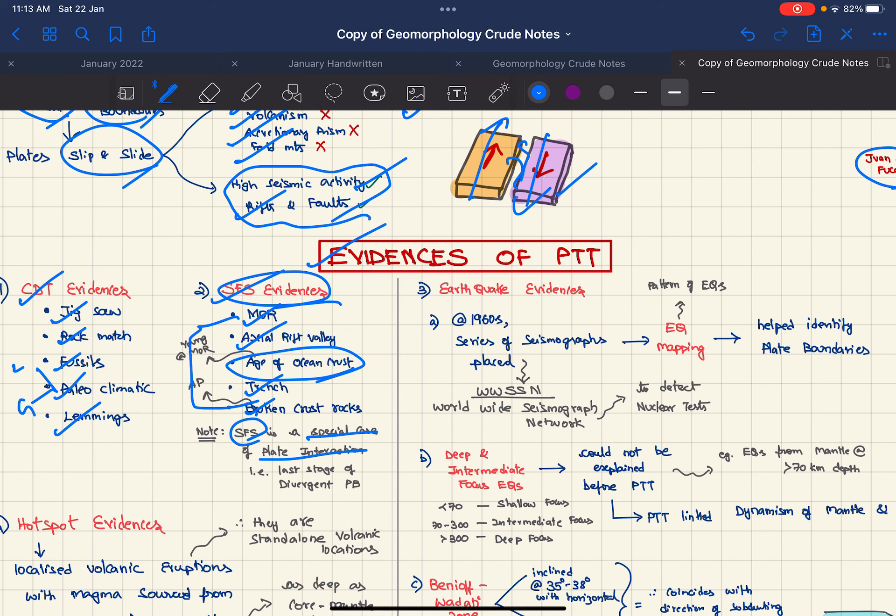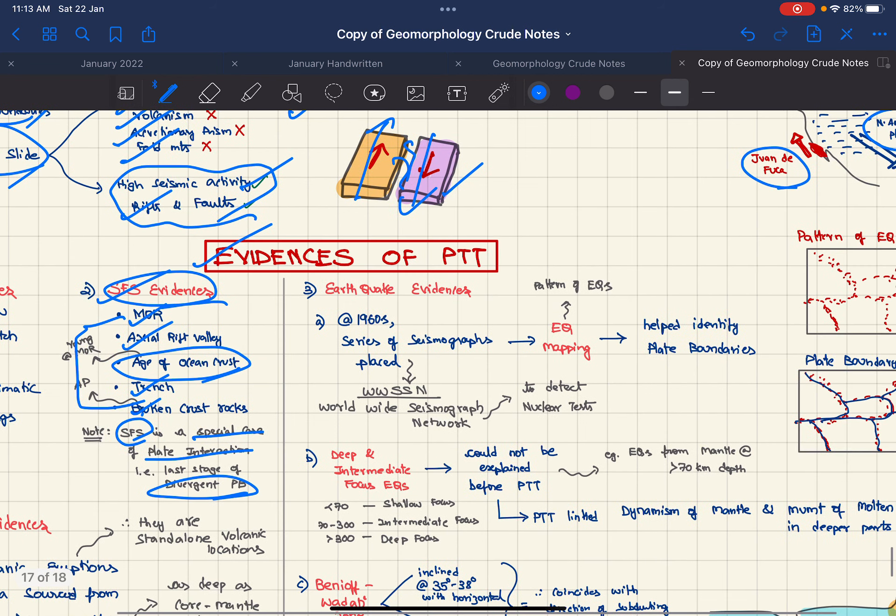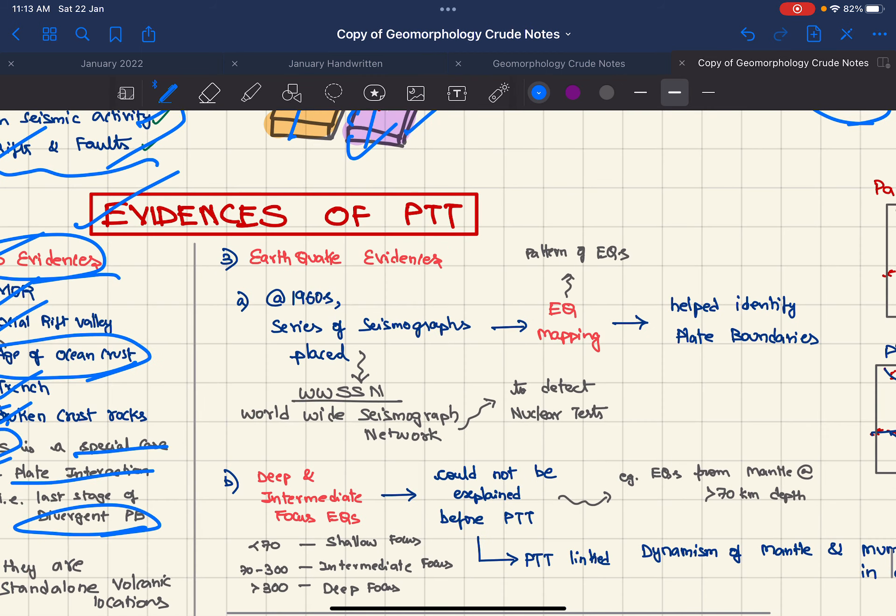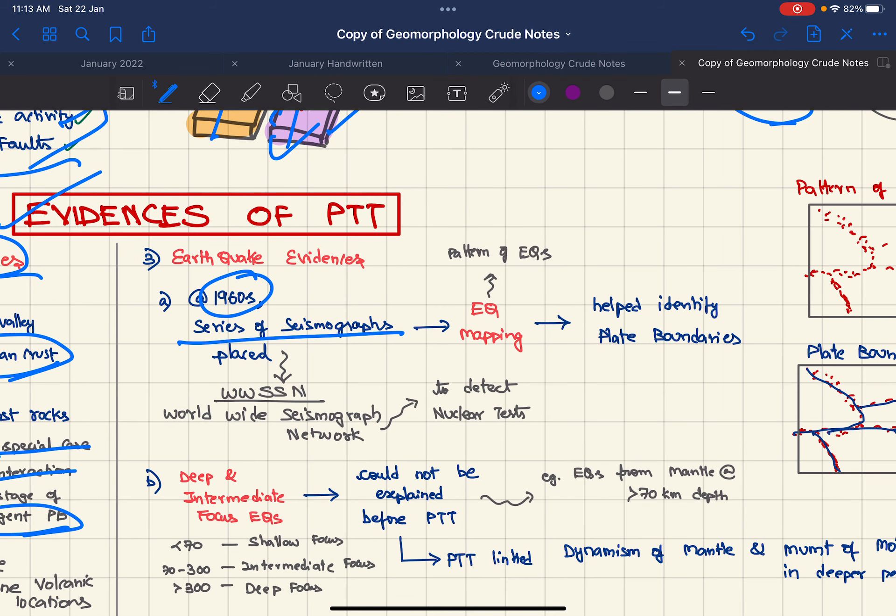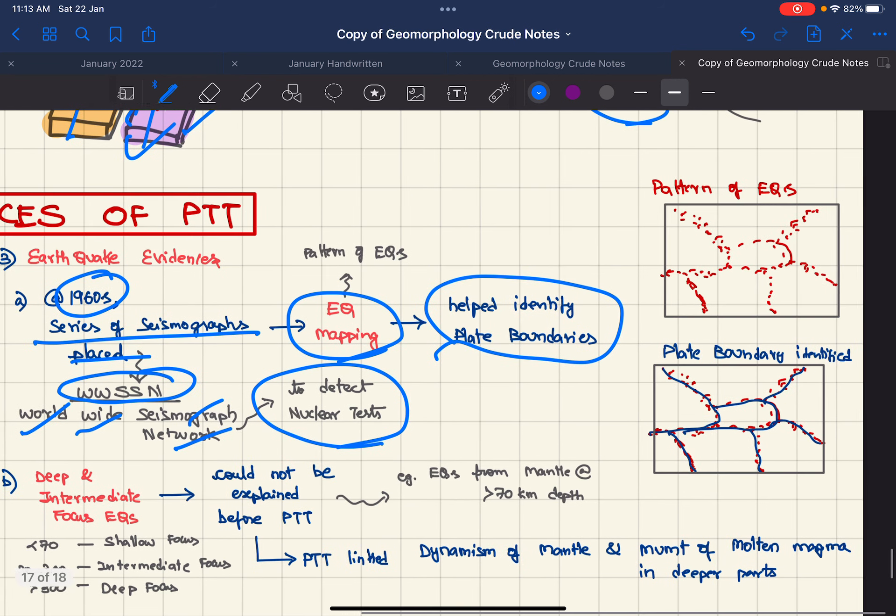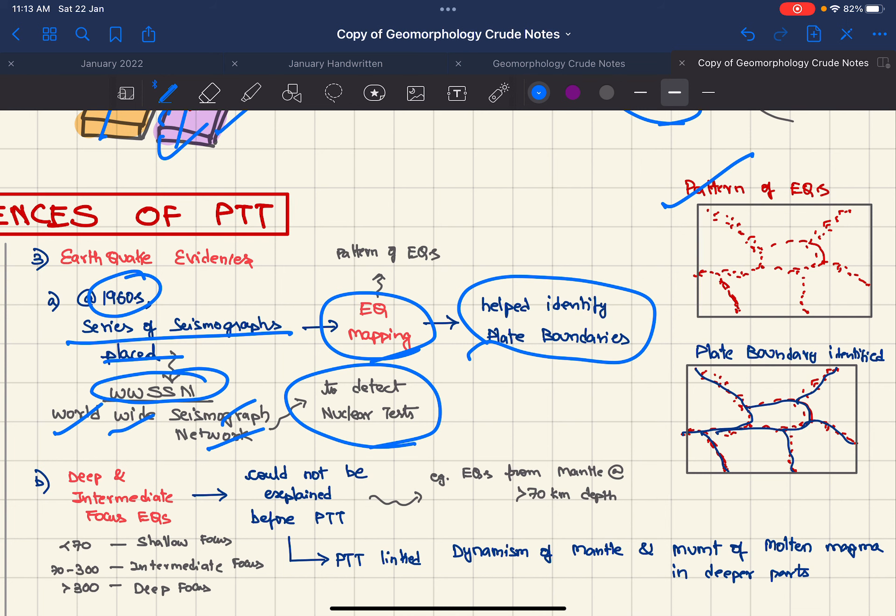Next evidence is earthquake evidences. In the 1960s, series of seismographs were placed as part of WWSSN which is Worldwide Seismograph Network. This was mainly done to detect nuclear tests. Because of this, earthquake mapping was done which helped us identify the plate boundaries.